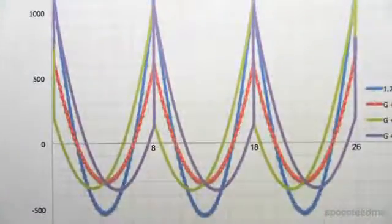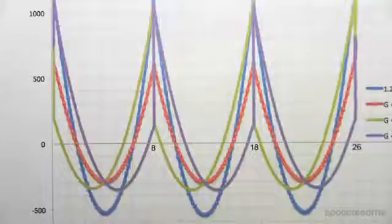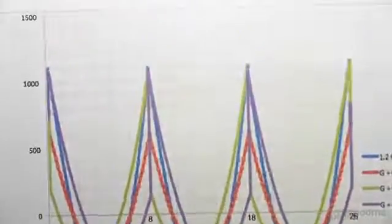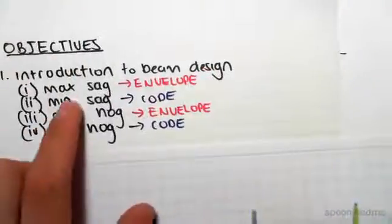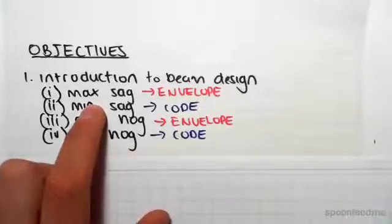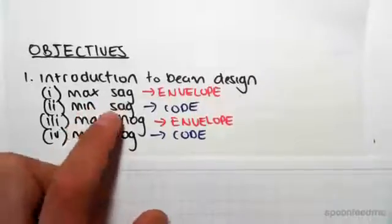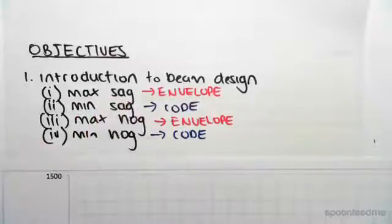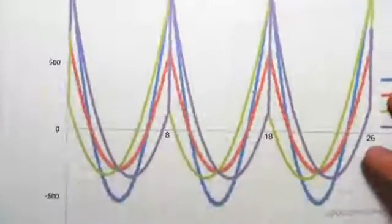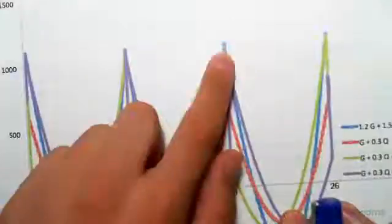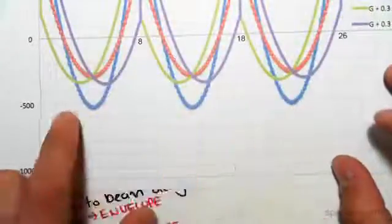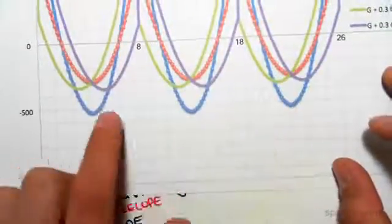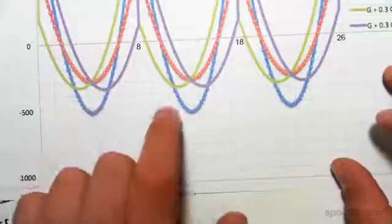The beam design philosophy works like this: we're going to be looking at sagging first. We're designing for a max sagging value and a minimum sagging value. The max sagging value, the design moment, comes straight from this envelope. We're looking at the maximum sagging values and how much reinforcing you need to handle these values.